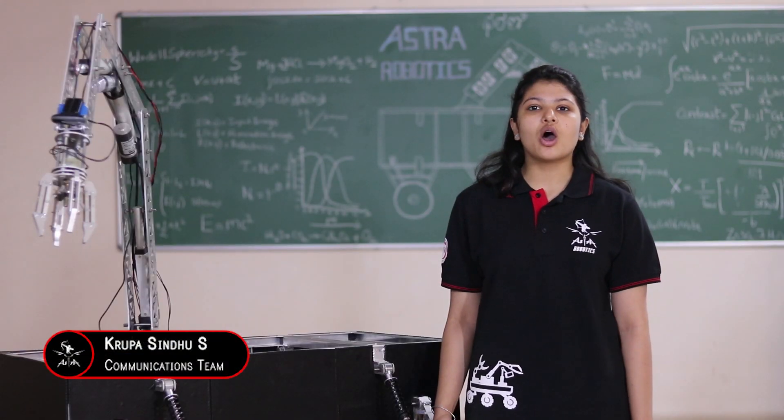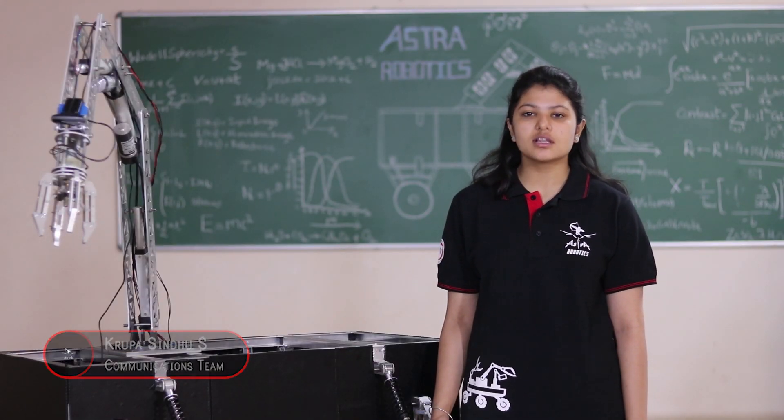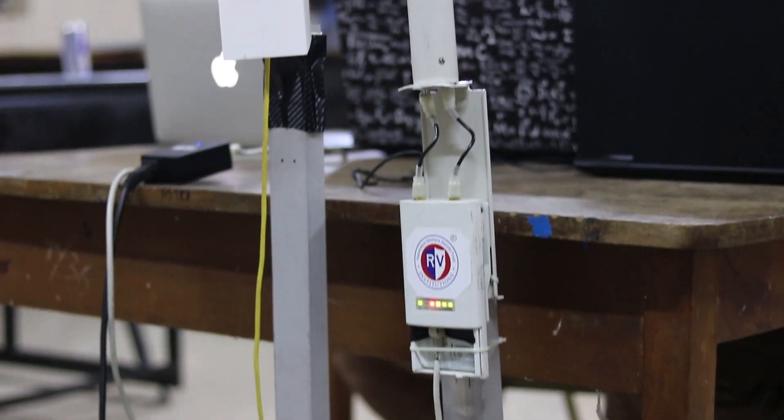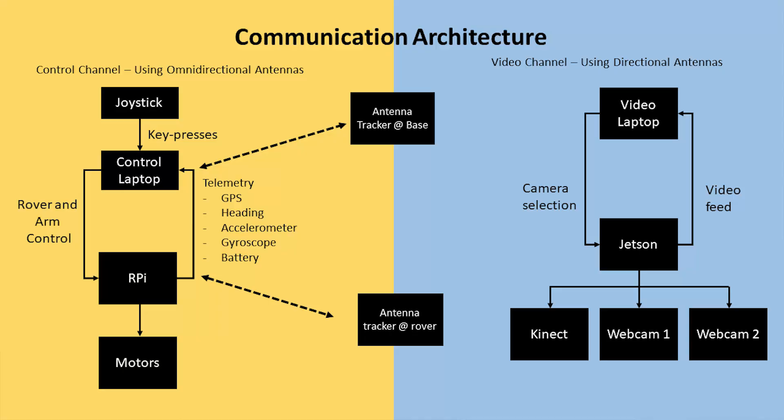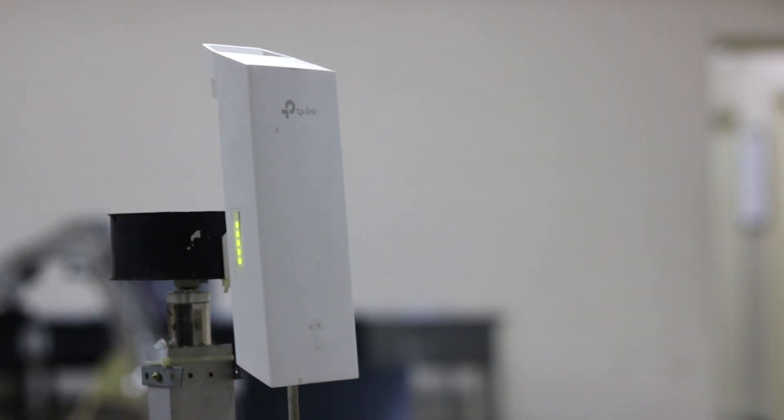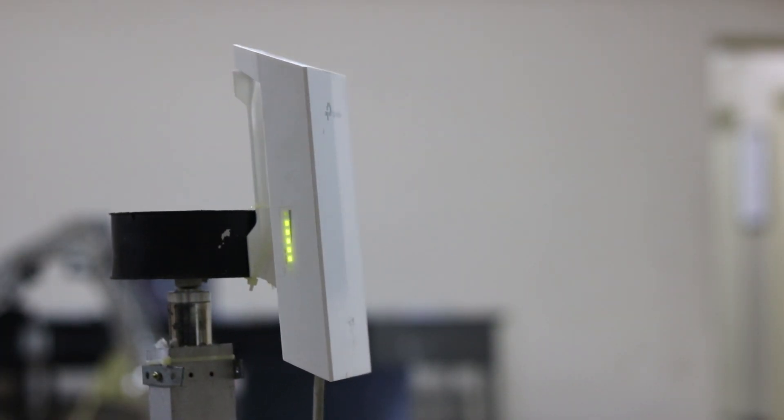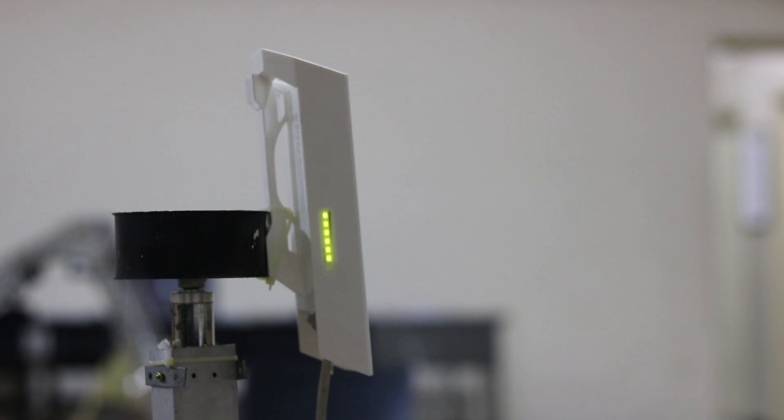We are using omnidirectional and directional antennas operating at 2.4 GHz. The directional antennas are used for video streams while the omnidirectional setup is used for reliable control and telemetry including some non-LOS conditions. An antenna tracker is being tested for automatically rotating the directional antenna as the rover moves.